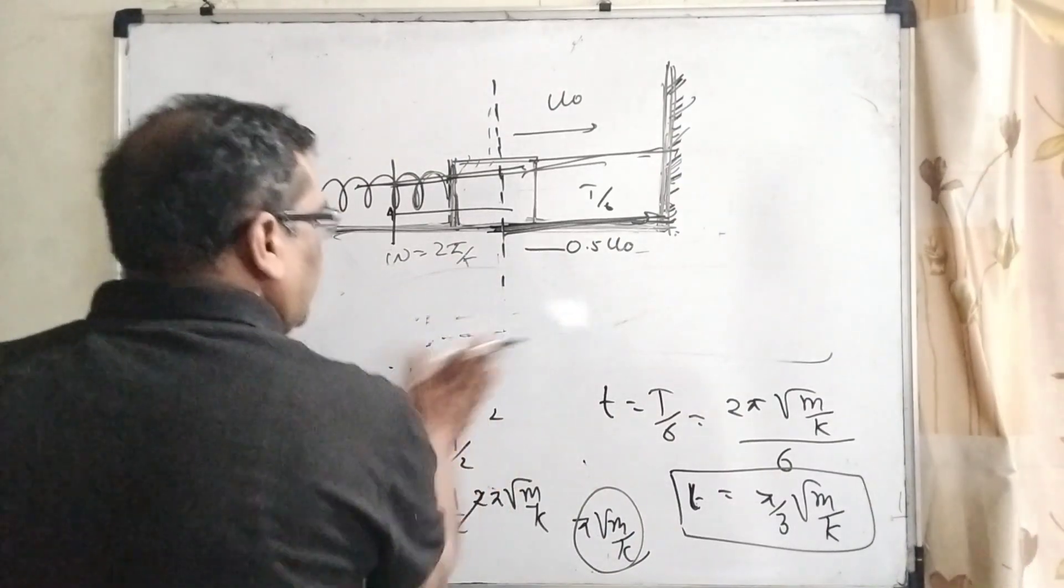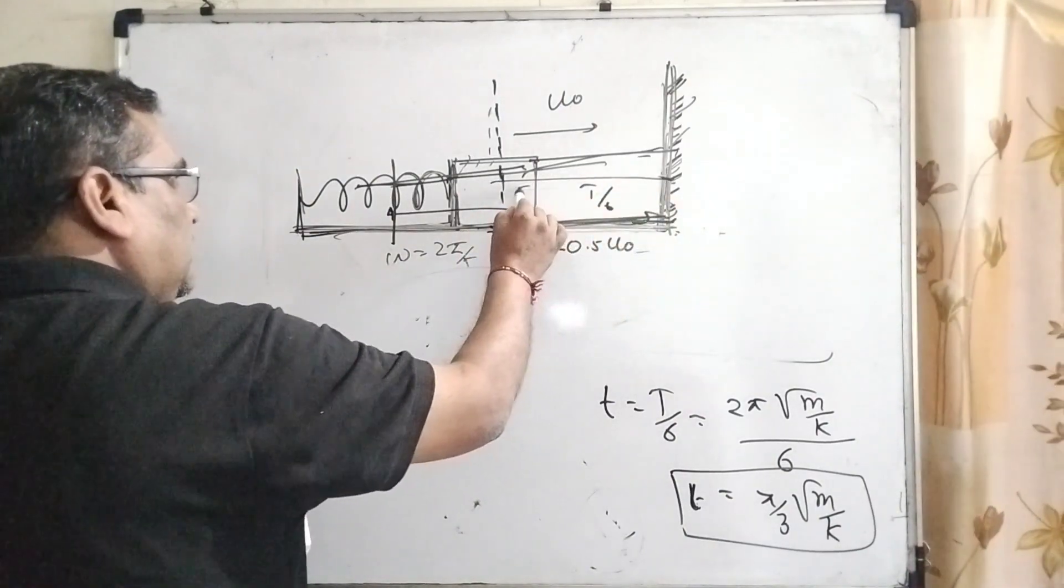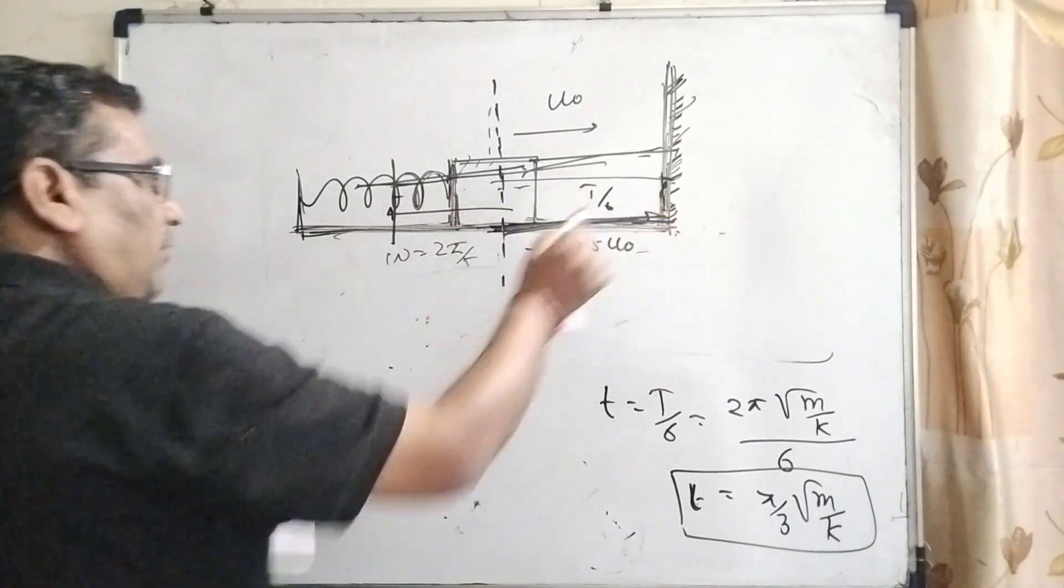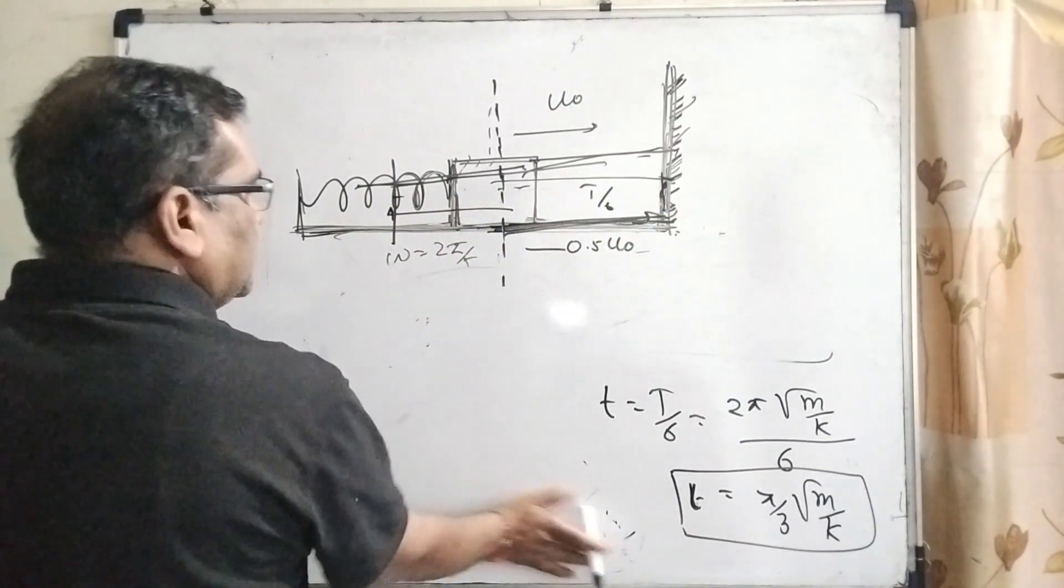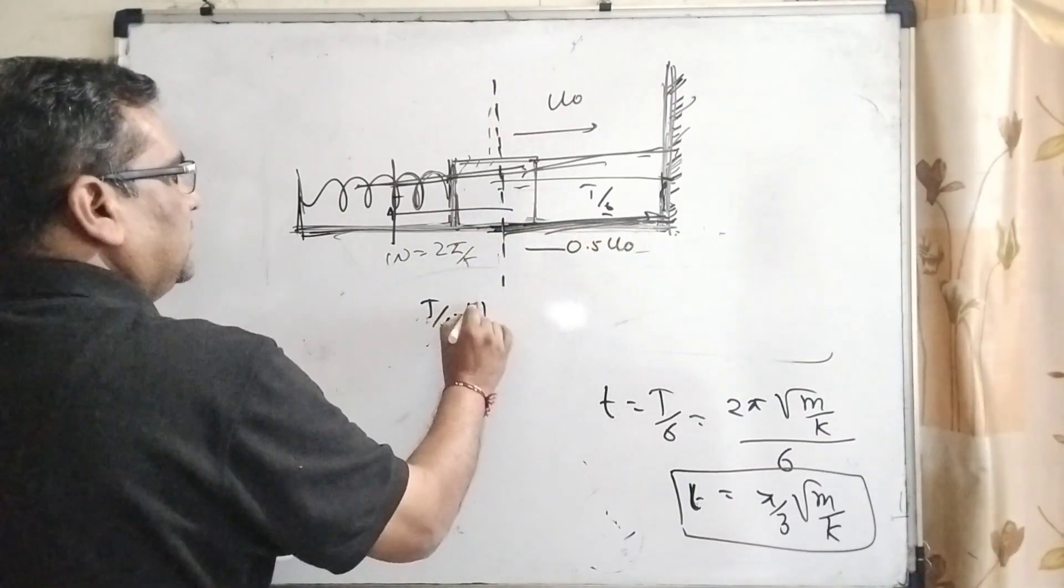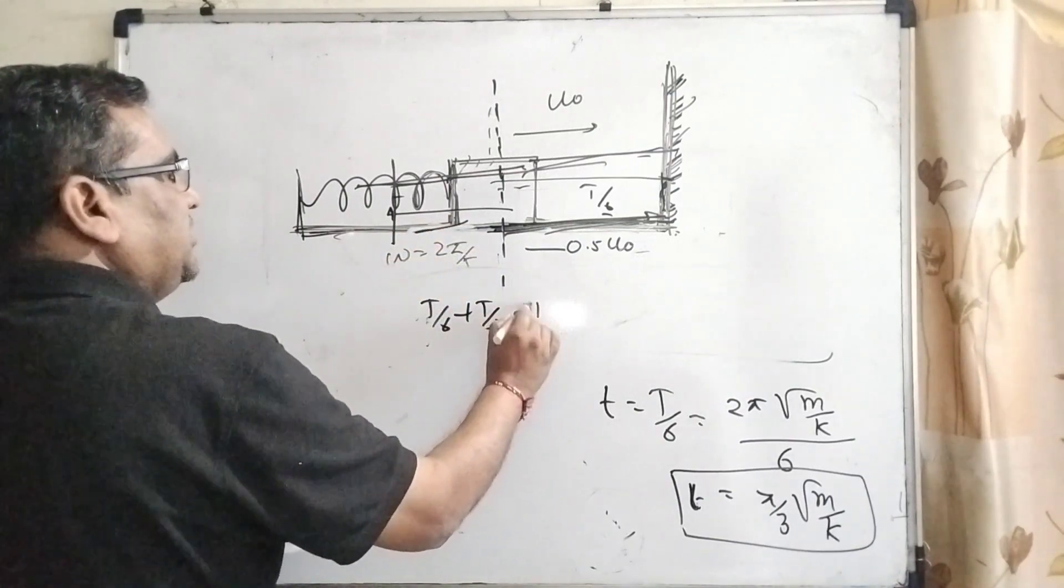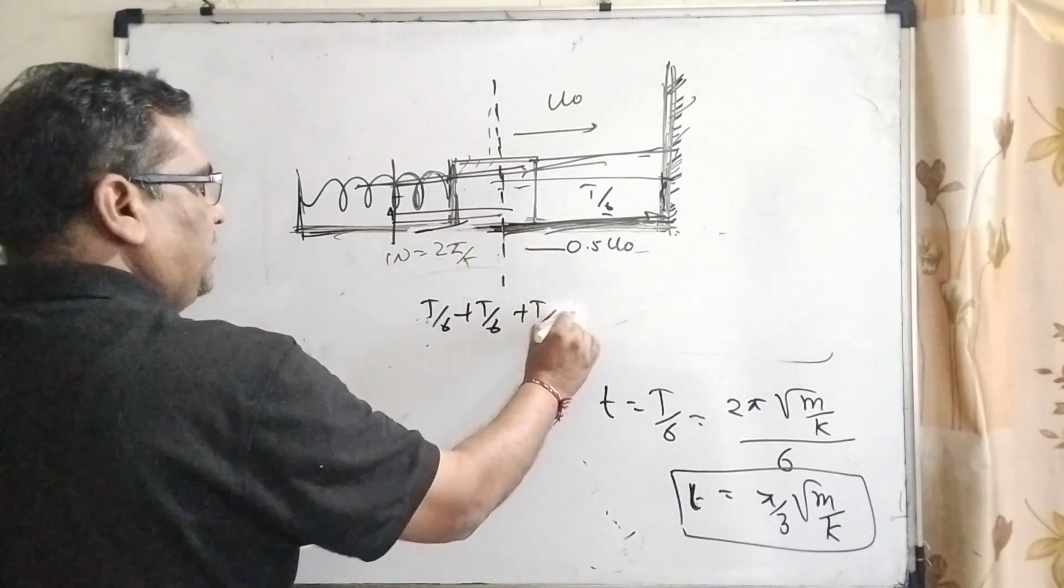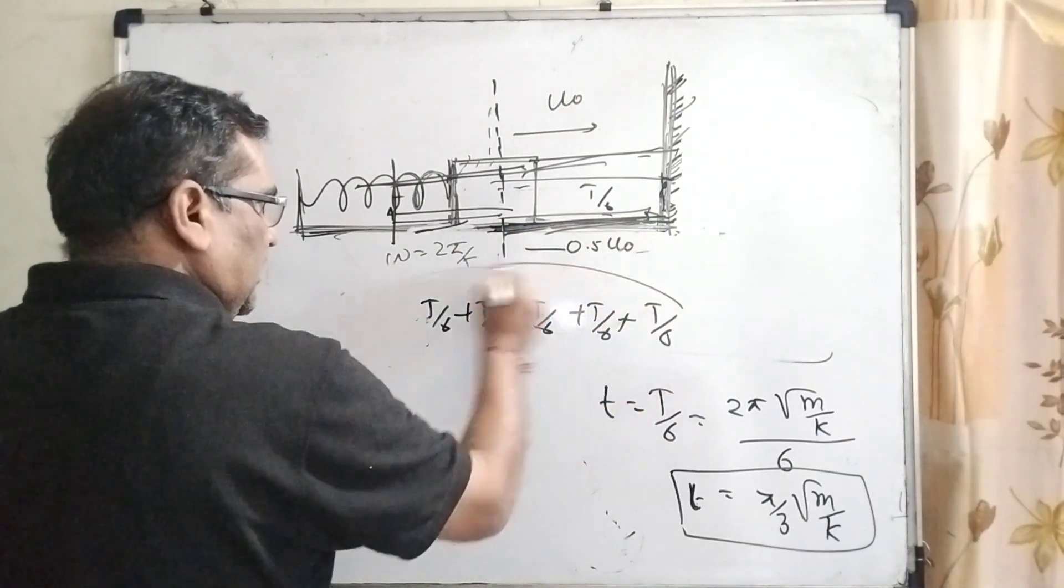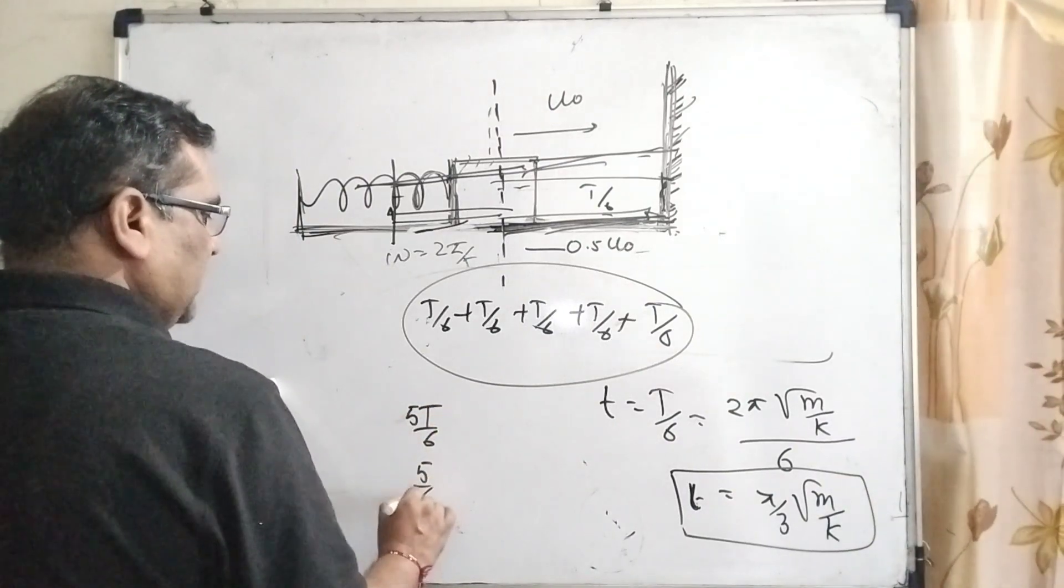Okay, so here what the question says: when it strikes, comes back, goes to the compression, again comes back. How many times does the time period come here? t by 6 first time, come back t by 6, goes to the left side t by 6, again come to the mean position t by 6, and then strike t by 6.